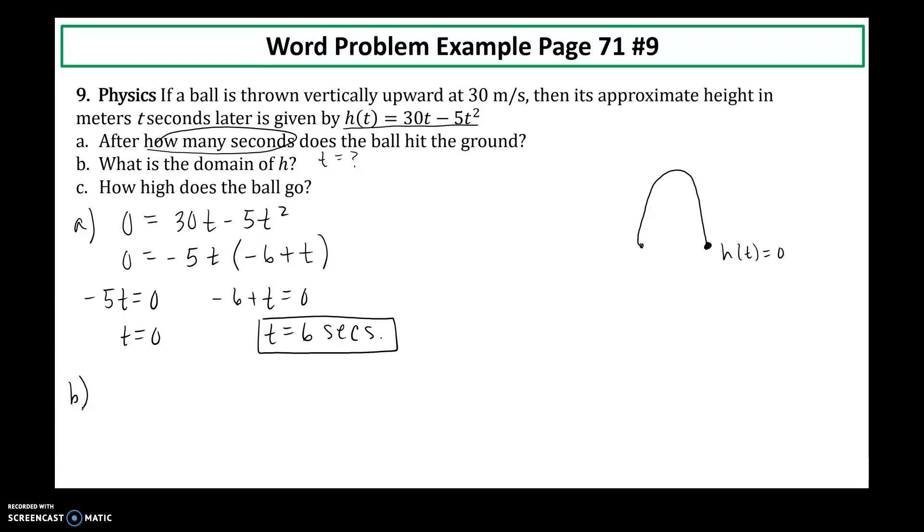Now for part b, what's the domain of h? This is asking how long is the ball in the air in flight from start to finish. So now this domain, I'm going to equal them. So at time t is equal to 0, I'm at ground level. And then what did you guys just tell me in part A? How long did it take for the ball to hit the ground again? It took 6 seconds. So in interval notation, when I include the values, my domain would be from 0 to 6 with hard brackets around it.